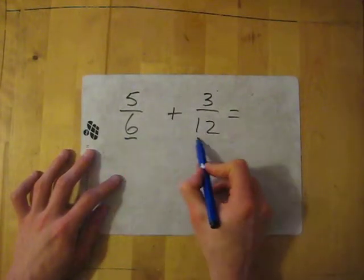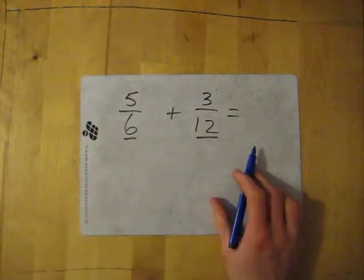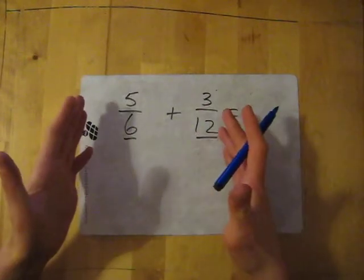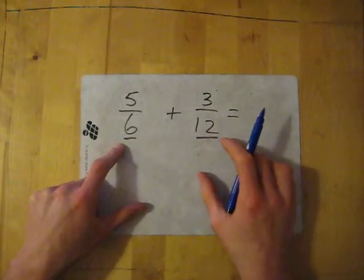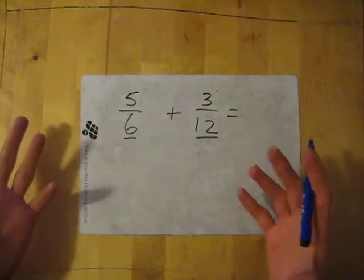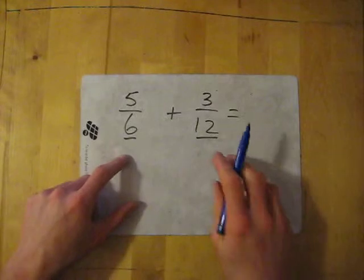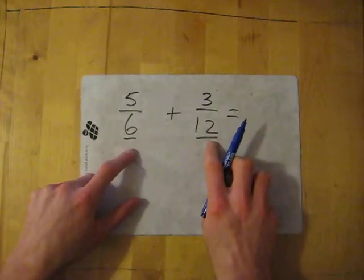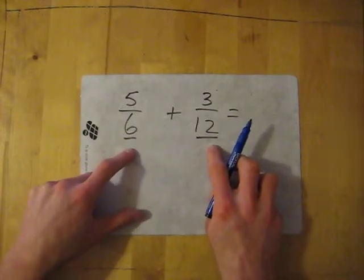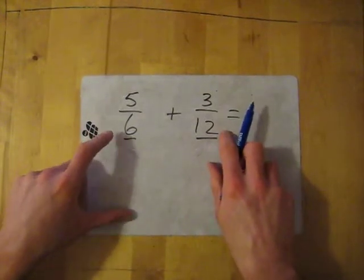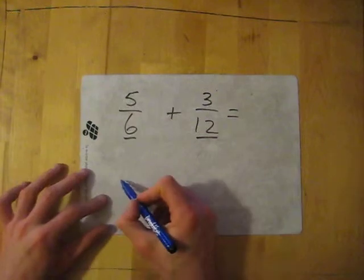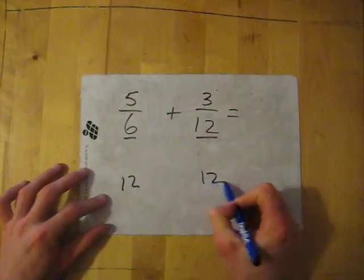Now, we need this denominator to be the same and at the moment we've got a 6 and a 12. So what we need to look at is we need to think, right, what is in the 6 times tables is also in the 12 times tables. Which is the smallest number? And if I think, right, I know 6 is in the 12 times tables and 12 is in the 12 times tables. Okay, so my common multiple is going to be 12. So I'm going to change both of these numbers so that they're out of 12. So I'll write 12 below both of them.